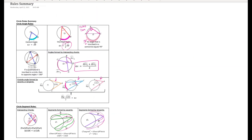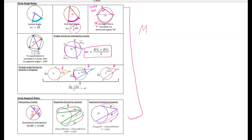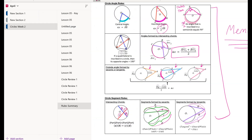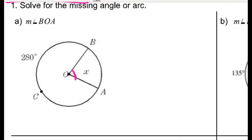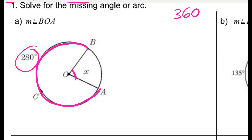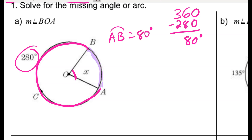These are a lot of little rules to memorize, generally proven by similar triangles, but we need them in our back pocket to know which rule to apply. For problem A, I have a circle with central angle BOA. Arc BCA is 280 degrees, and all arcs sum to 360. So the missing arc AB is 360 minus 280, which is 80 degrees. Since this is a central angle, the arc equals the angle, so angle BOA is 80 degrees.